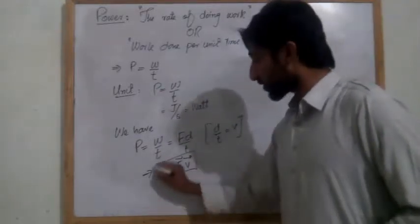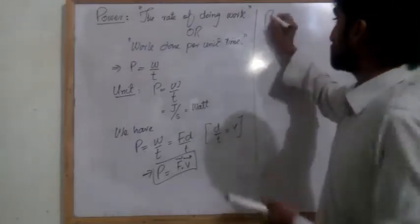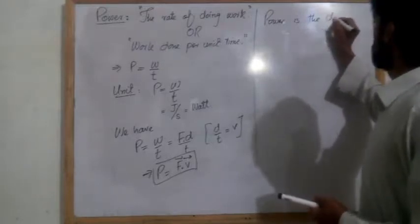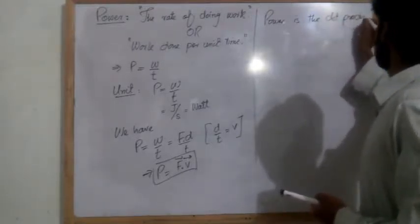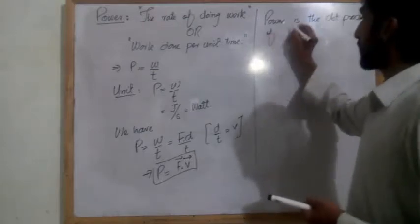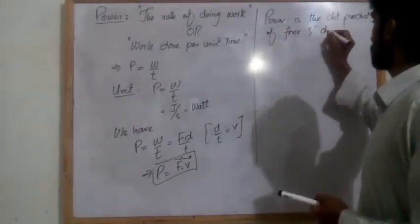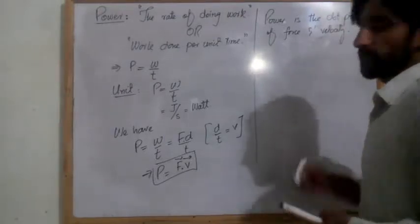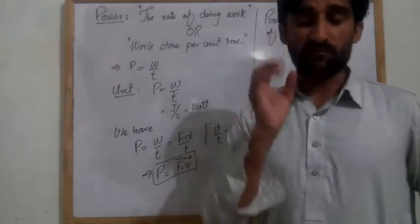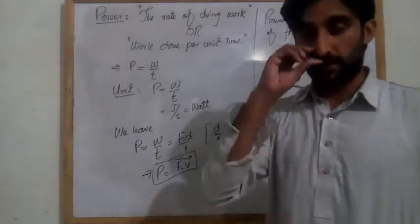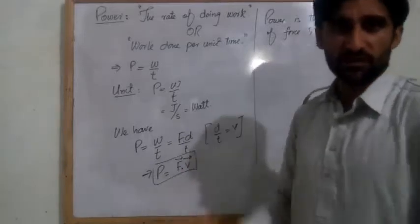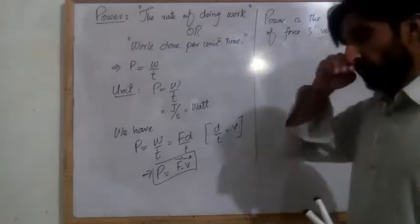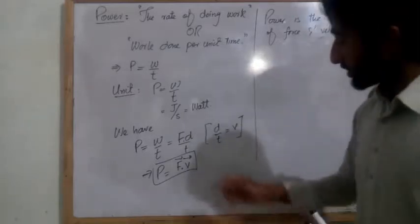I can say that power is the dot product of force and velocity. So this is another definition — we have two definitions and this is the third: power is the dot product of force and velocity.